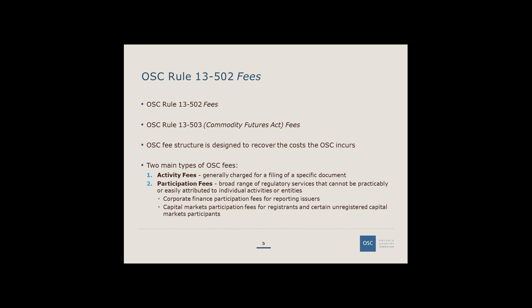Examples of forms and documents subject to an activity fee include reviewing prospectuses, registration applications, and applications for discretionary exemptive relief — each with a specific fee. The second bucket is called participation fees — fees for a variety of regulatory services not attributable to a particular filing or document. There are four main types of participation fees.